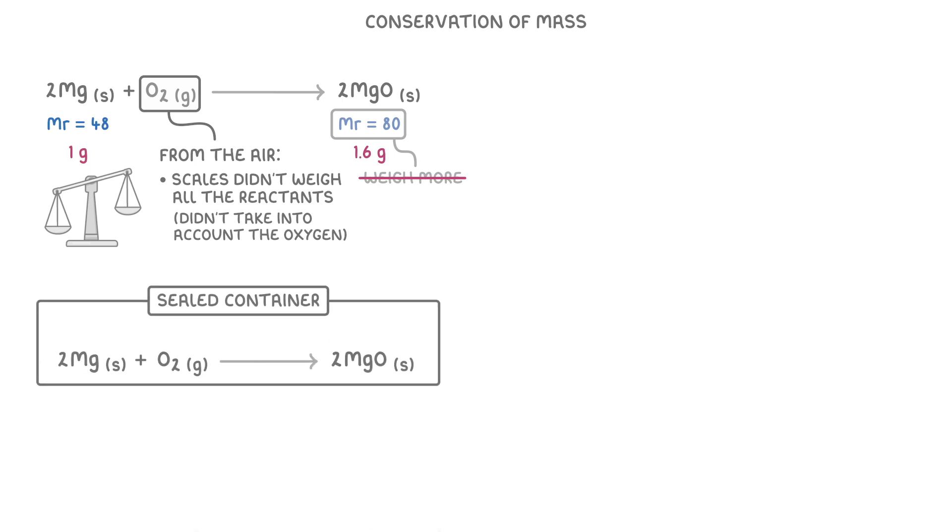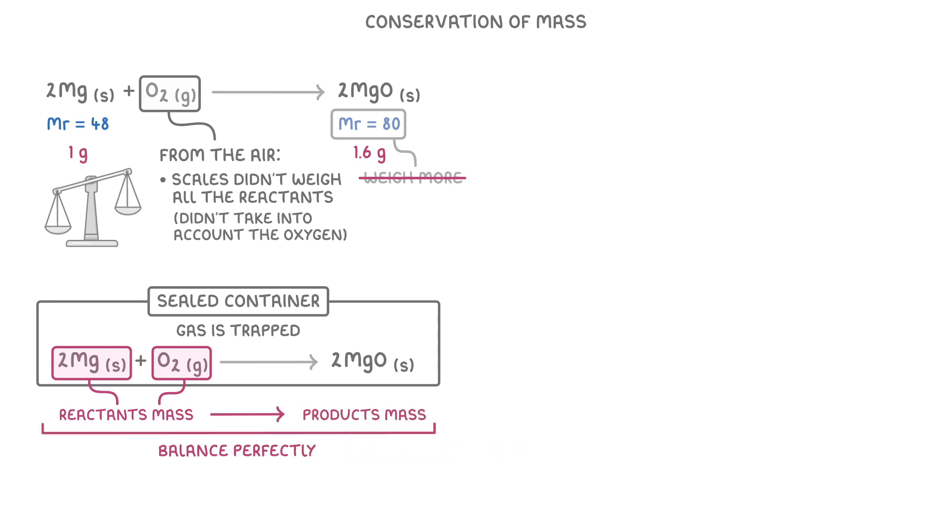In contrast, if we were to do the whole experiment inside a sealed container, the gas would be trapped within the container. So when we measure the reactant's mass, it would take into account both the gaseous oxygen and the solid magnesium. So the weight of our reactants would balance perfectly with the products.